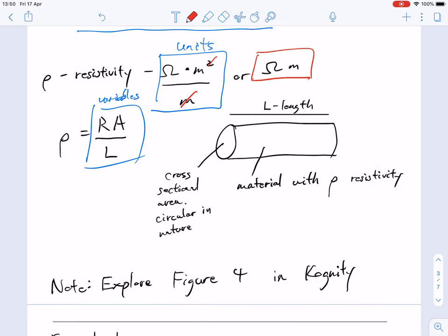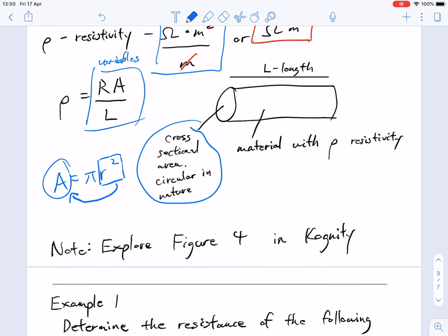The other thing to keep in mind is that when we look at area, because we're looking at a circular object, a wire, the area tends to be pi r squared. You may not be given the area directly, but rather the radius. Then you solve for the area and the other variables. The length is the length of the wire, here is the cross-sectional area, and resistivity depends on the material. Remember, it's independent of its dimensions, purely based on the material itself.